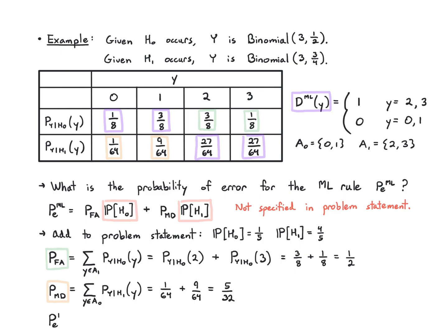I just weight these two things together by the probabilities of their hypothesis. I get 1/2 times 1/5 plus 5/32 times 4/5. Overall I get 9 over 40.